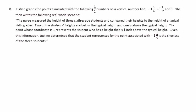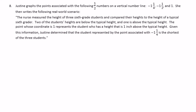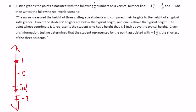Number eight. Justine graphs the points negative one and one-fourth, negative one and one-half, and one on a vertical number line. She writes a real-world scenario. Let me draw it first. Zero is here, one is above it, then there's negative one and below that negative two. Negative one and one-fourth would be right here, and negative one and one-half would be right below it.